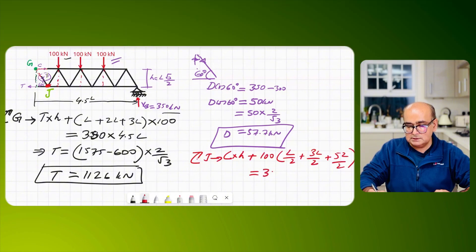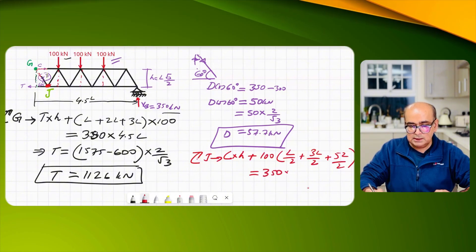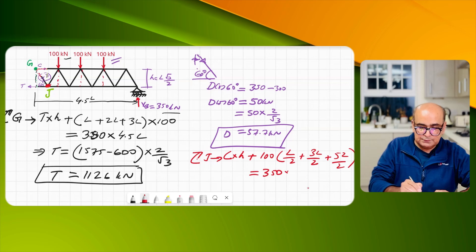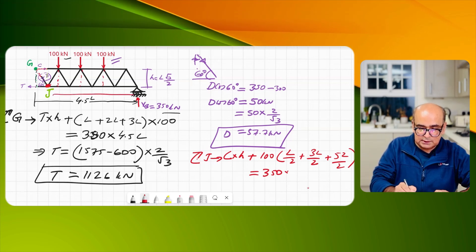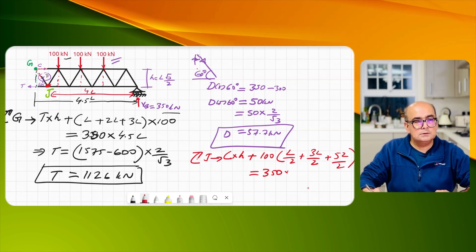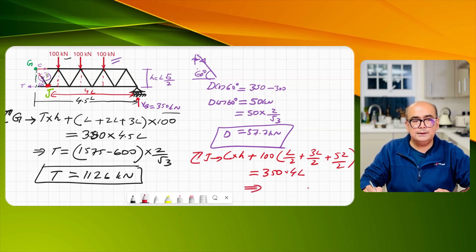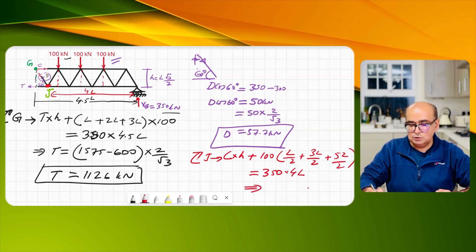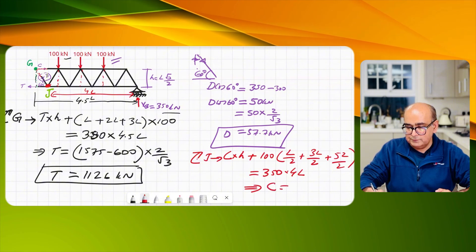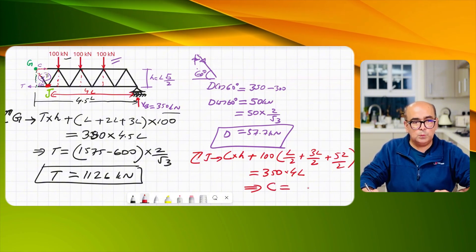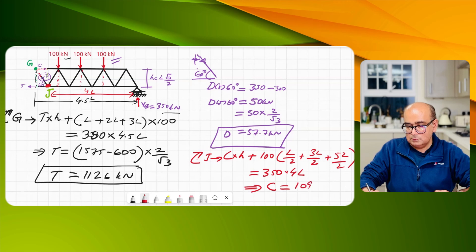This is 350 times a distance between J and B is I think 4L. So that would be 4L and if you simplify all this you will get value of C as 1097 kN.